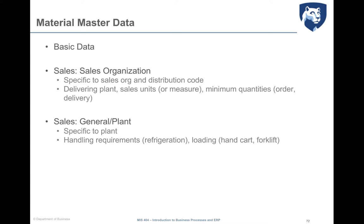Sales plant data can be provided at the plant level and give details on how the material will be shipped from that plant. For example, specific transportation requirements — like the fact that products need to be refrigerated or kept at a very low temperature — or methods of loading, like using a handcart, a forklift, or a crane.